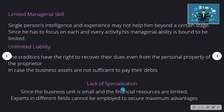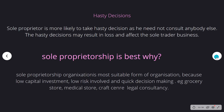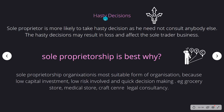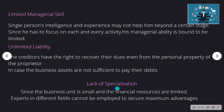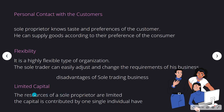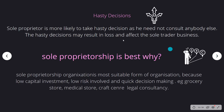He cannot specialize in any one particular field because he has to perform different types of work — he has to be an accountant, a purchaser, a salesperson, and manage different affairs. So the business unit is small and financial resources are limited; experts in different fields cannot be employed for maximum advantage, resulting in lack of specialization. Sometimes he is bound to take hasty decisions because he need not consult anybody, and thinking whatever decision he takes is correct, he may make wrong decisions.